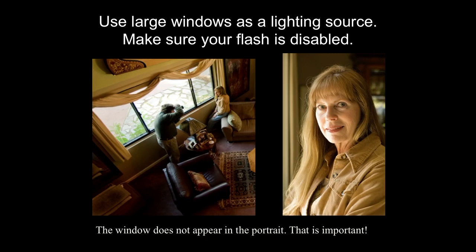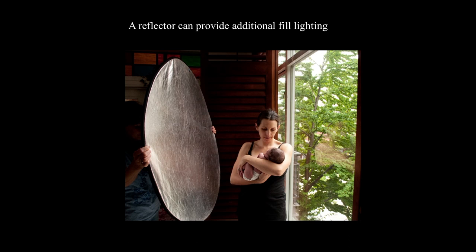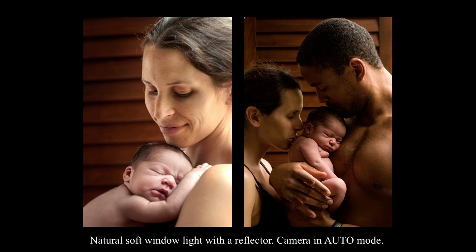Use large windows as a lighting source. Make sure your flash is disabled. The window does not appear in this window light portrait — the photographer, that's me, has my shoulder to the window, and my subject has her shoulder to the window. So it's a window-lit portrait, but the window is not in the photograph. Here's a newborn near a north-facing window at the hospital — another example of using soft window light. It's a nice directional light with no harsh shadows. You can't go wrong with this kind of lighting. A reflector can provide additional fill lighting — in this case, it's soft natural window light with a reflector. The camera's in auto mode and it just looks like a studio portrait. It's very, very easy to do.